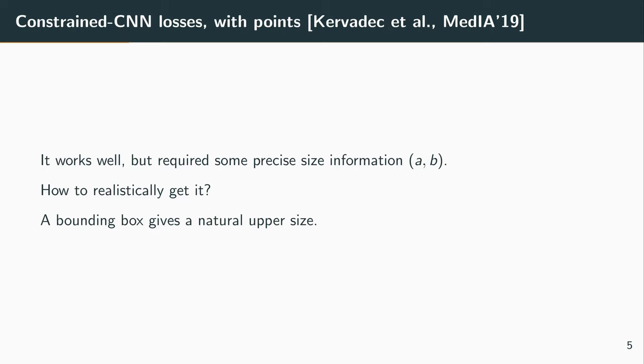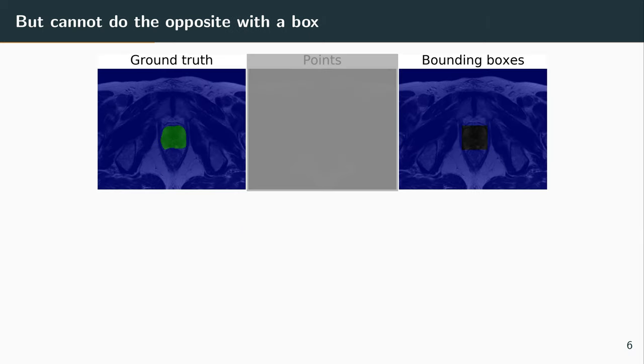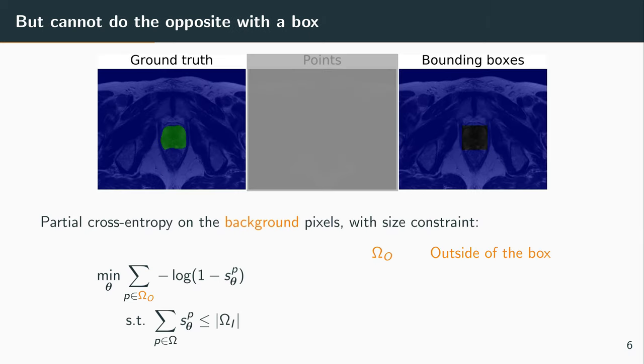Now let's say we had a bounding box annotation. It would give a natural upper bound to the size of the object, because the object cannot be bigger than the box containing it. And if we try to apply the exact same setting that we did, but with bounding box annotation,